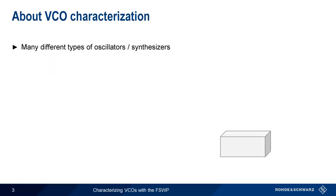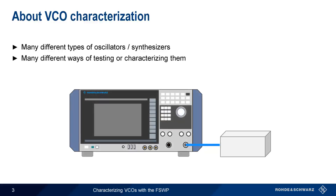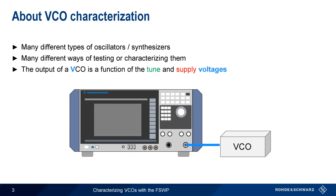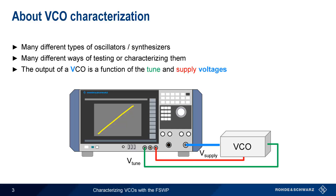There are many different types of oscillators or synthesizers — that is, devices designed to produce a waveform at a given frequency — and there are many different ways of testing or characterizing these sources. As the name implies, the output of a VCO, or voltage-controlled oscillator, is almost entirely a function of two voltages. The control or tuning voltage sets the VCO frequency but can also affect other characteristics of the output waveform, and, as we'll see, the supply voltage that provides power to the VCO can also affect some VCO characteristics.